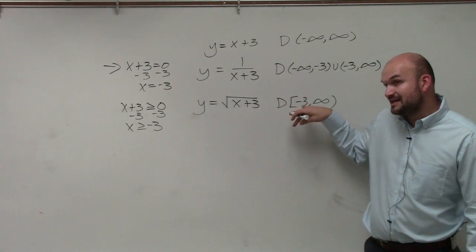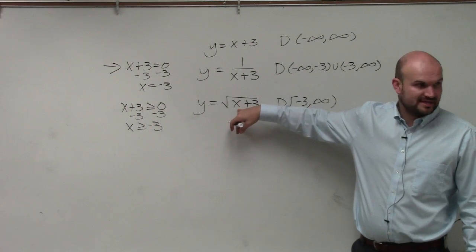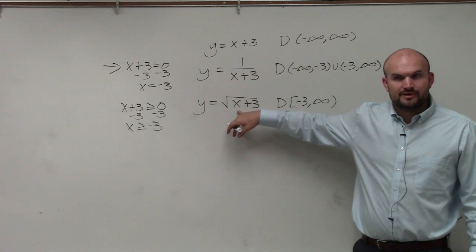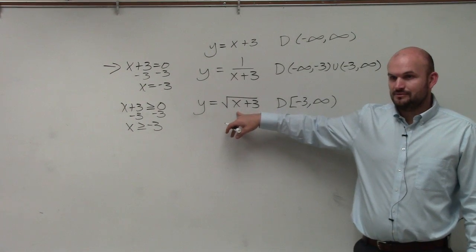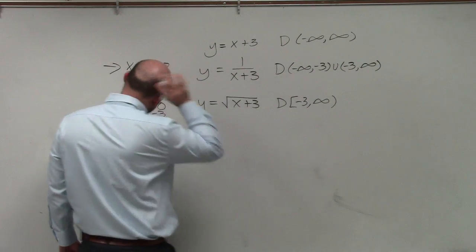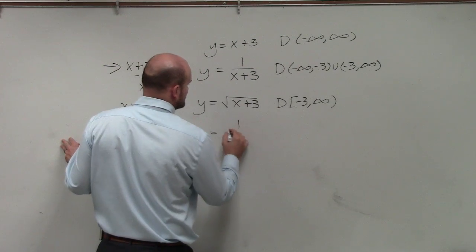But if you do a number less than negative 3, say negative 4. Negative 4 plus 3 is negative 1. We can't take the square root of negative 1 under our real number system. Am I good on my third equation? Then all I got to do is let's just change it one more time.